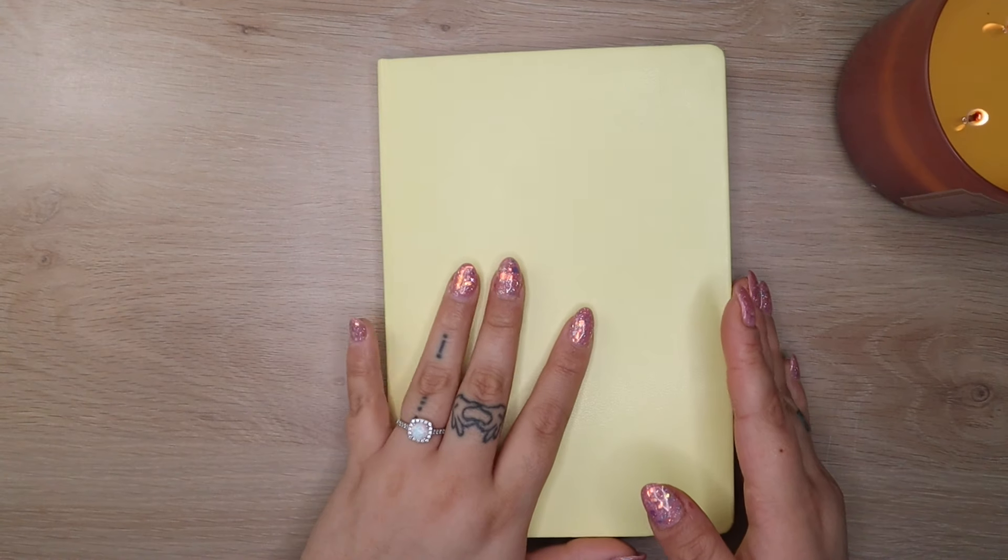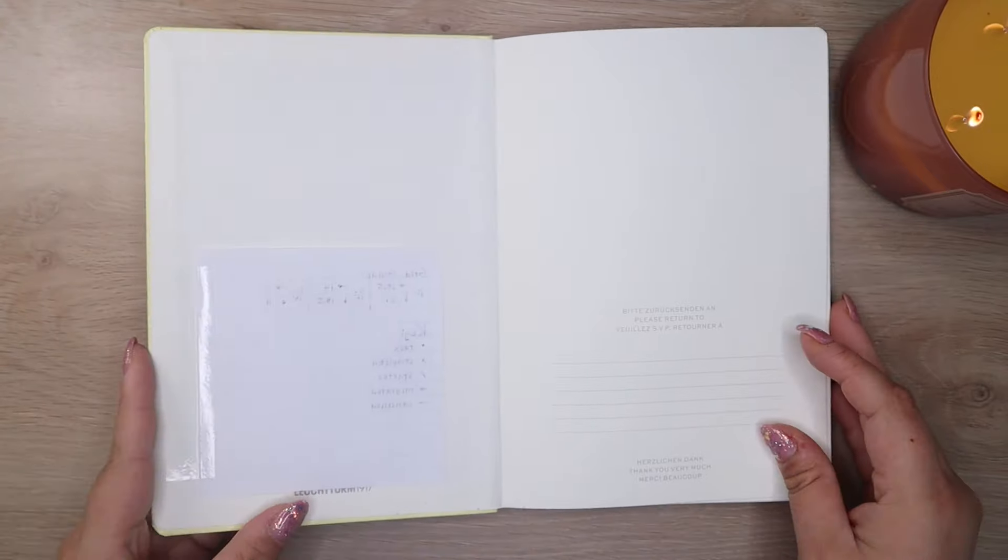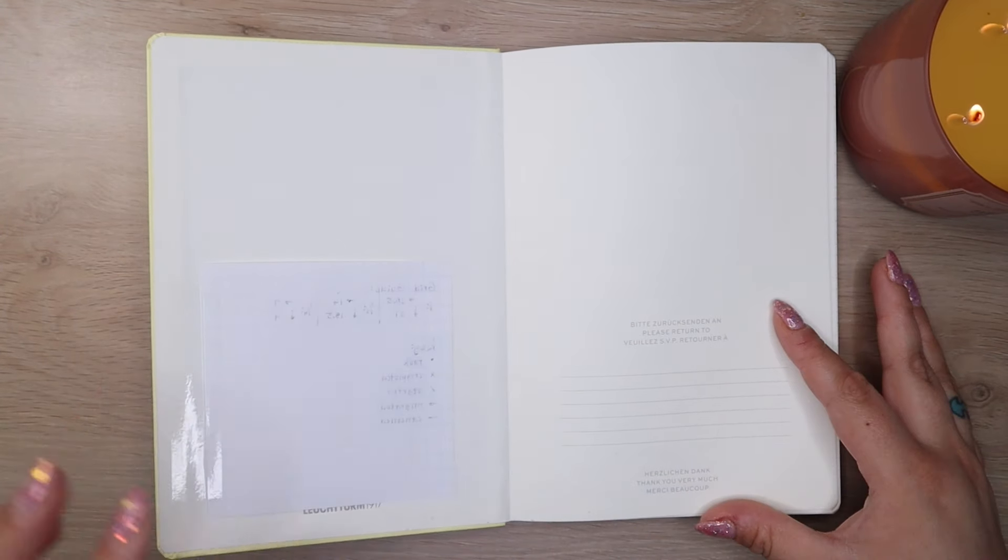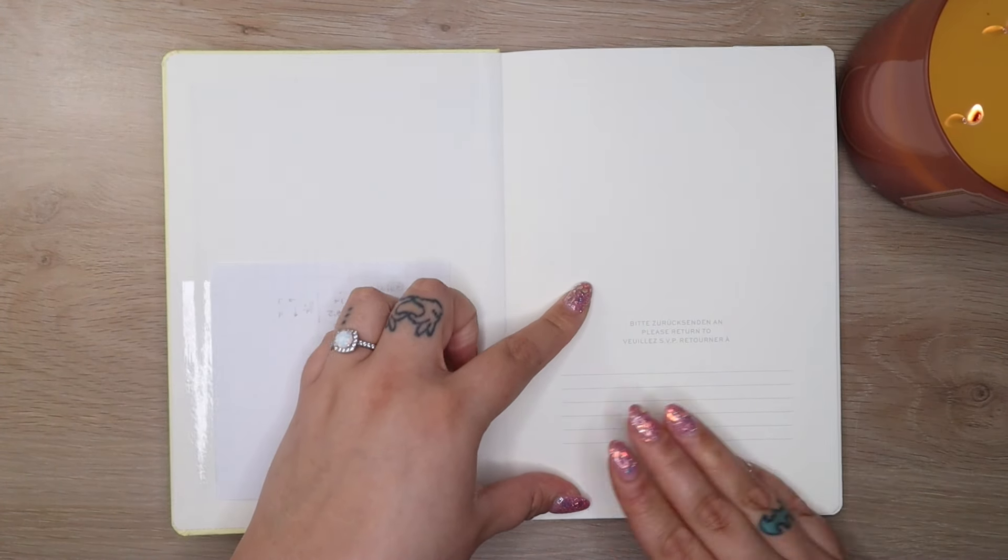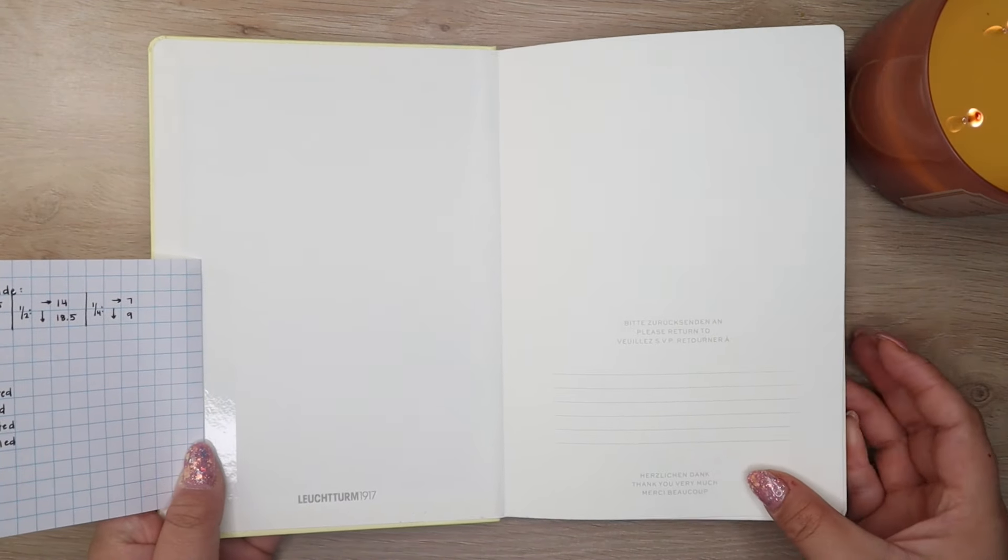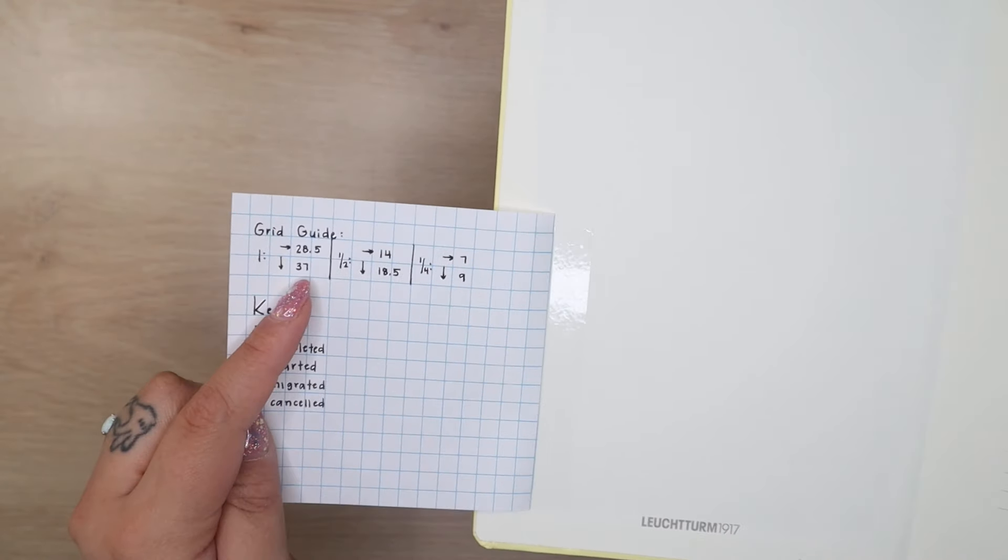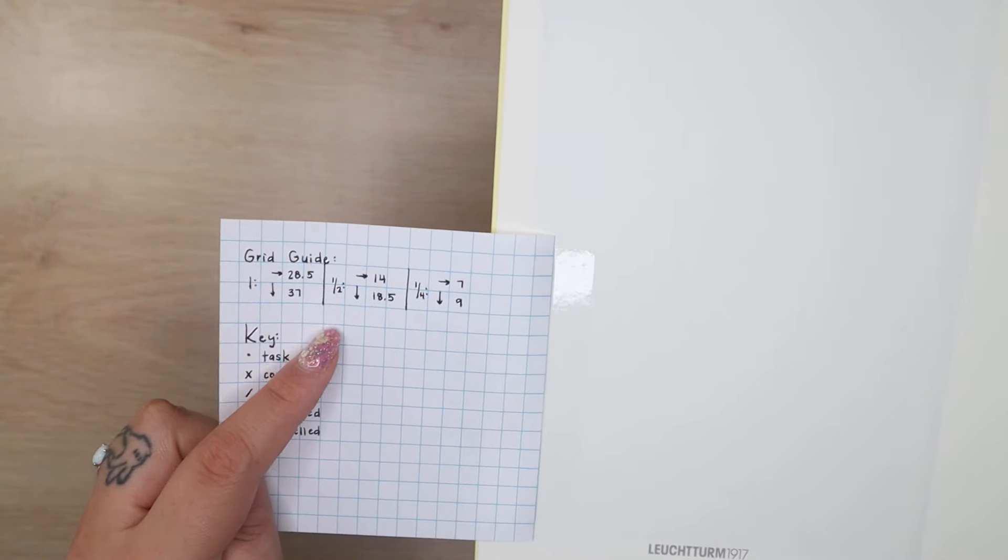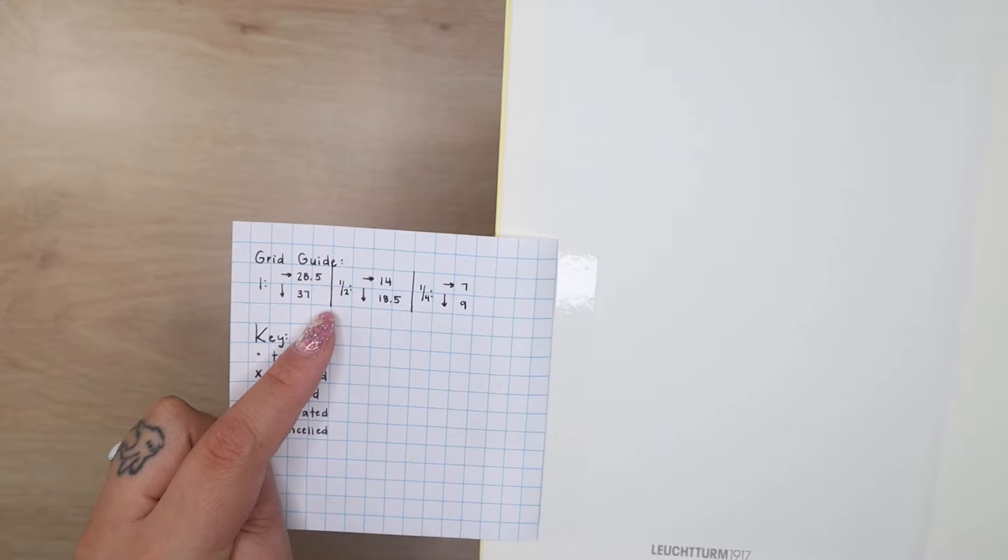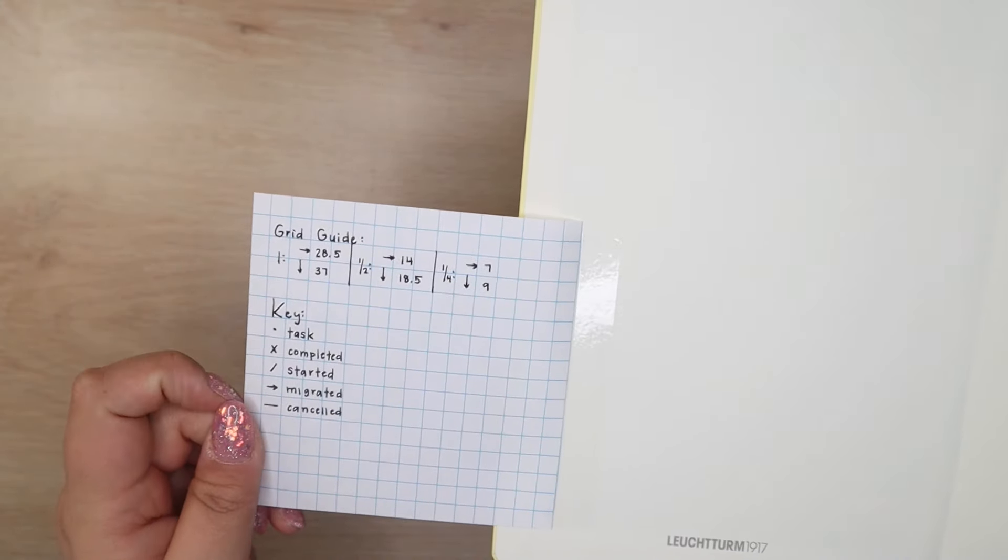But anyways let's go ahead and get started with my little flip through here because I have a lot to show you guys. So flipping in we have my nameplate page. Haven't even written on this one yet and then I opted to do a little flip out with my grid guide of just showing how many squares horizontally and vertically and what it would take to divide my pages in half and then in quarters and then I also have a key.